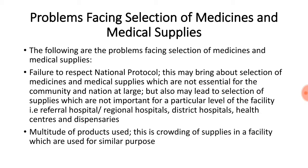Every country has national protocols that guide selection of medicines and medical supplies. When there is failure to respect the national protocol, it leads to selecting medicines that are not essential for the community and the nation at large, because the selection is not based on proper selection criteria and will not meet the users' needs.